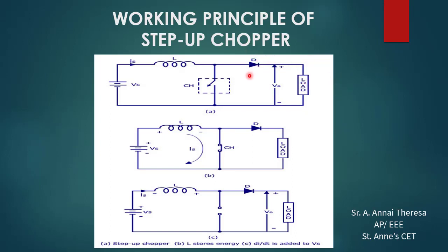Let me explain the working principle of the step up chopper using the circuit diagram. For the switch, we can use a BJT, MOSFET, or IGBT — any switch can be used. The step up chopper works in two modes: the first mode is when the switch is closed (switch ON), and the second mode is when the switch is open (switch OFF).